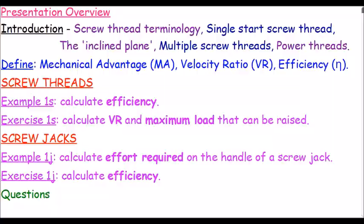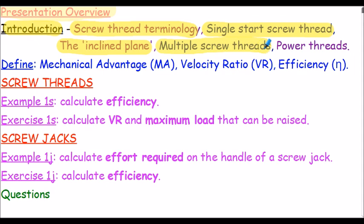Here's a brief presentation overview. We commence with the introduction, stating various screw thread terminology, illustrating the single start screw thread and how it is analysed using the incline plane analogy. We then illustrate multiple screw threads and power threads. We define the terms mechanical advantage (MA), velocity ratio (VR), and efficiency, usually denoted by the Greek symbol lowercase eta.